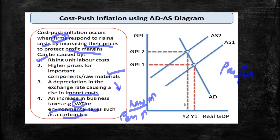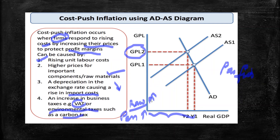In the graph of cost-push inflation, the X-axis represents real GDP and the Y-axis represents the general price level. At the initial price level Y1, the economy is at a certain equilibrium. When costs increase, aggregate supply AS1 shifts to the left. As a result, the general price level increases. This leftward shift of aggregate supply is what defines cost-push inflation.